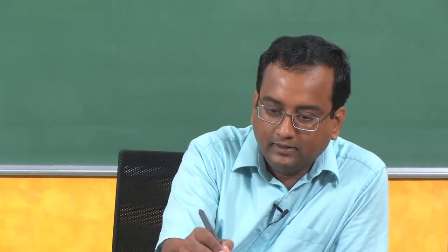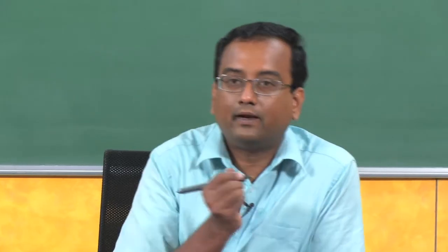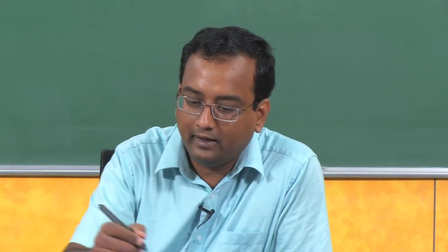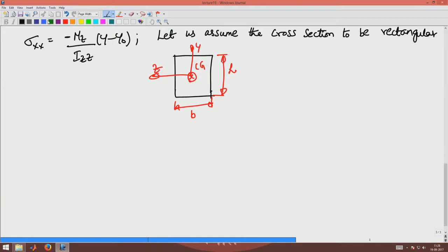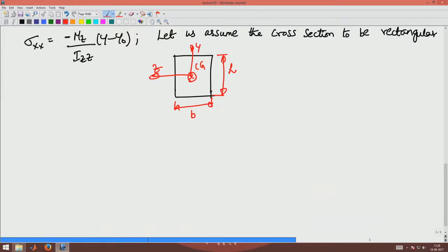Sigma xx is given by Mz divided by Izz, into (y minus y_naught). Mz we have found before. For Izz, let us assume the cross-section to be rectangular with dimensions b (width) and h (height), where y and z are the cross-section axes. The CG of the rectangular section is at the midpoint, so the distance in y is h/2 and in z is b/2.